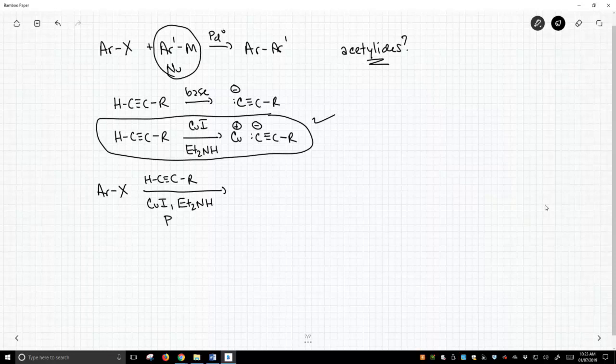And of course, to make the whole thing go, we need our palladium catalyst. And what do you get? You get the aromatic ring coupling with the acetylene and we get this product. So we have a new way to make substituted triple bonds. This is called the Sonagashira coupling.